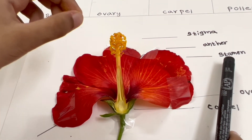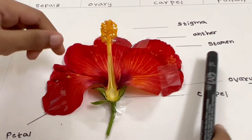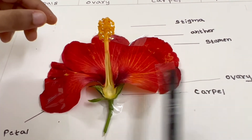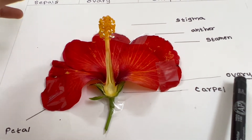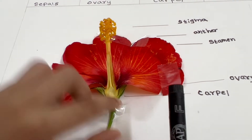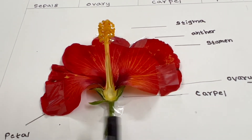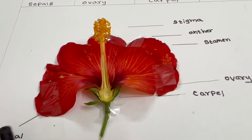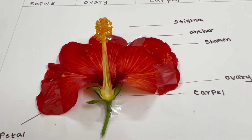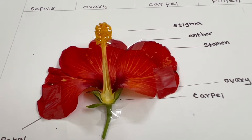Diagram labels: stamen, ovary, carpel, petal, anther.